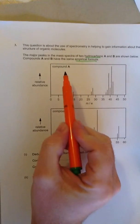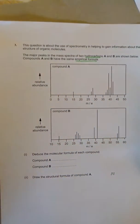So if we look at the two mass spectra, there's one for compound A and compound B, and we're going to use that to work out the molecular mass of the compound. How do we do that?